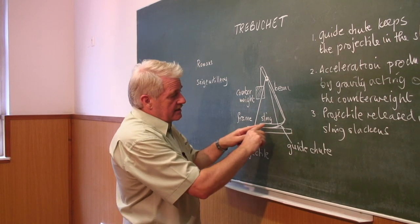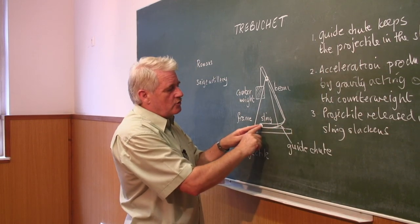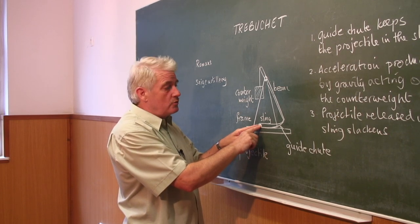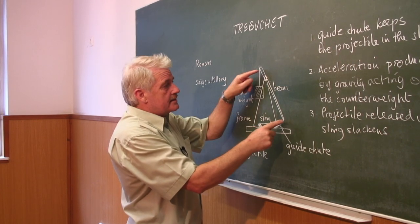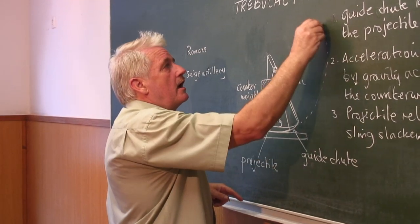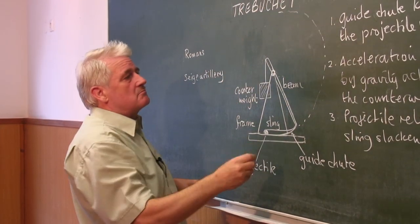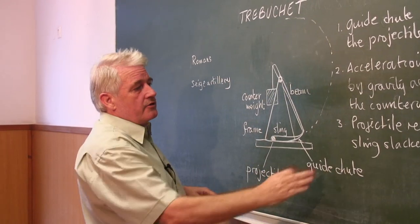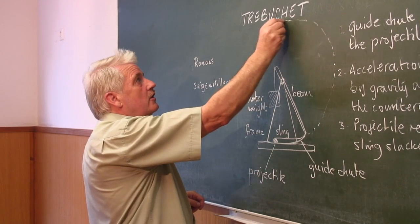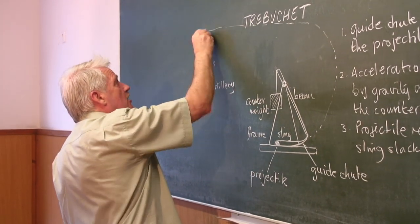Obviously, there is a guide chute here to make sure that the projectile doesn't come out of the sling too soon. As it accelerates, it is then swung in an arc and when it reaches high on the arc, the sling will become slack. Then the projectile continues on its own path to the target.